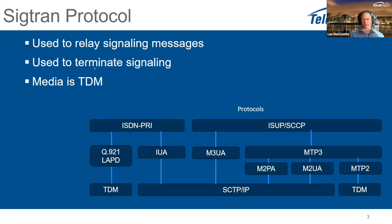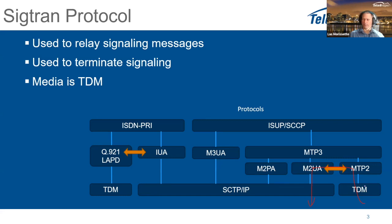SIGTRAN is also used to terminate signaling. You can either relay the signaling to another system or terminate it. For relay, you receive messages from the TDM network, re-encapsulate them into SCTP, IP, and M2UA, and send them out on the network. You are essentially replacing a TDM T1/E1 link with an SCTP/IP link, and all messages are sent end-to-end without looking at the upper layers.